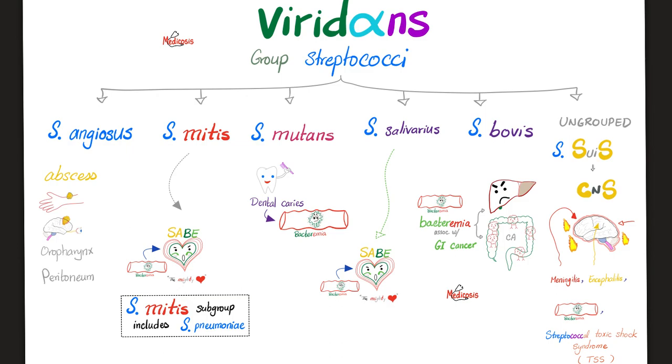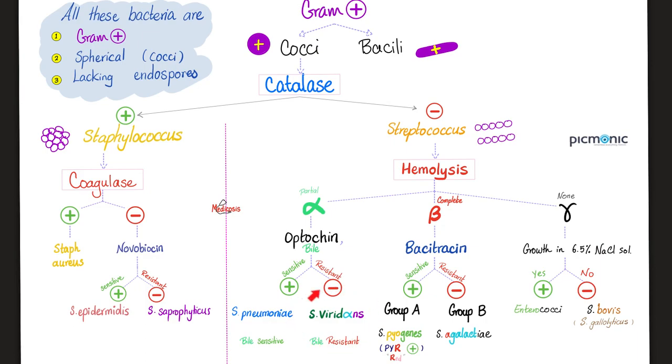Now, let's talk about the viridans group of Streptococci. They include gazillion organisms. Here are the famous ones. Streptococcus angiosus: the abscess, the oropharynx, and the peritoneal infections. Abscess on my skin and abscess in my brain. Mitis, the mighty heart. Subacute bacterial endocarditis after the bacteremia. How about mutans? Mutans is the mutating dentist. Think of dental caries and bacteremia. How about Streptococcus salivarius? Saliva. Subacute bacterial endocarditis. Streptococcus bovis. I like some bovis bovis. This is bacteremia associated with cancer anywhere in your gastrointestinal system, including colon cancer, liver cancer, etc. This is a very common exam question. Next, Streptococcus suis, CNS, meningitis encephalitis, and Streptococcal toxic shock syndrome. What are these? All of these are diseases that can be caused by the viridans group of Streptococci. Please pause and review.